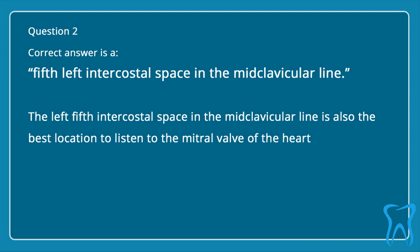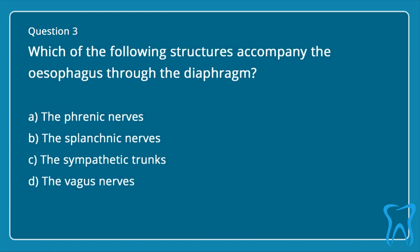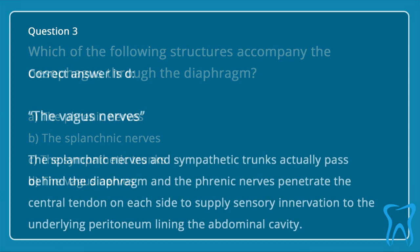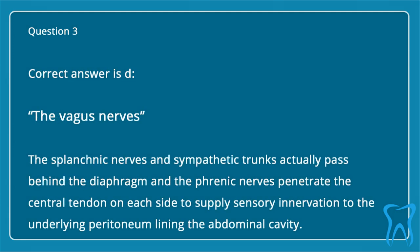Question 3: Which of the following structures accompany the esophagus through the diaphragm? a. The phrenic nerves. b. The splanchnic nerves. c. The sympathetic trunks. d. The vagus nerves. Correct answer is d. The vagus nerves.